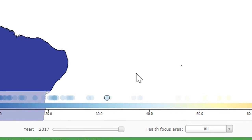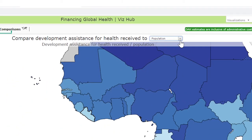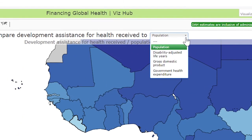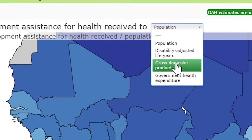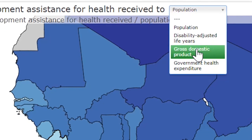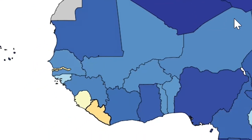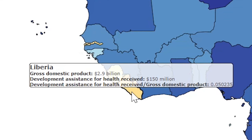By changing the metric in the drop-down menu, the impact of development assistance for health in Liberia becomes clearer. If Gross Domestic Product is selected, the development assistance for health of $150 million equals just over 5% of the $2.9 billion of Liberian Gross Domestic Product.